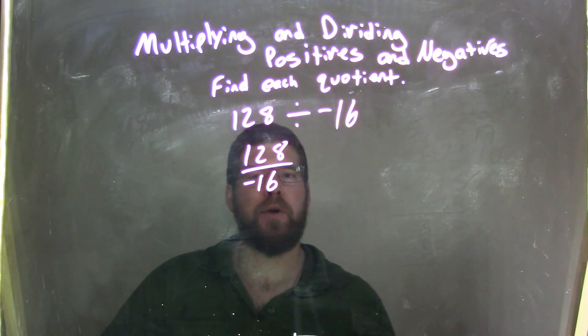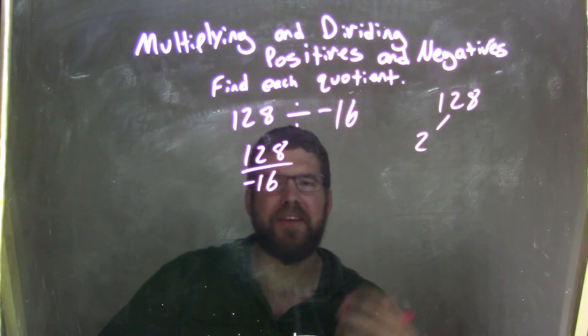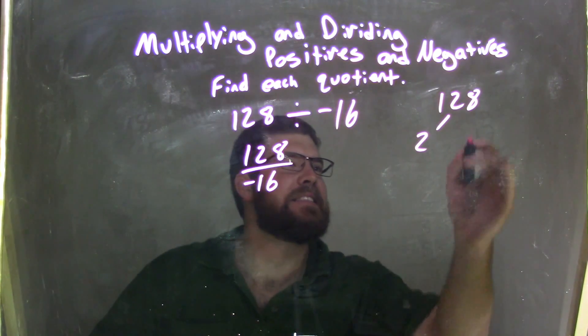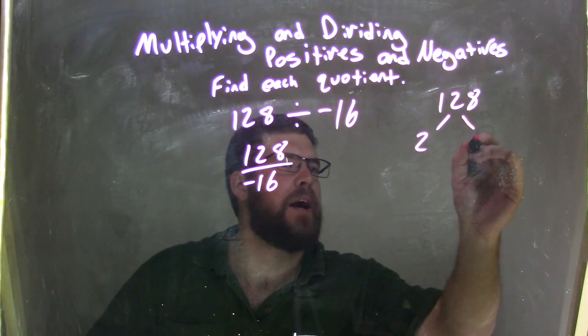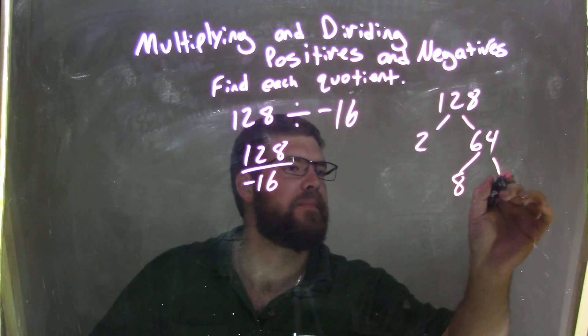So 128 I can break down. 2 goes into that - I always like to use 2, it's just easier. 2 goes into 128, we're looking at 64 times. Well, 64 is easy, that's 8 times 8.